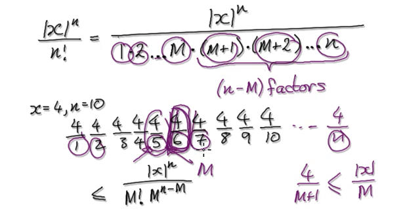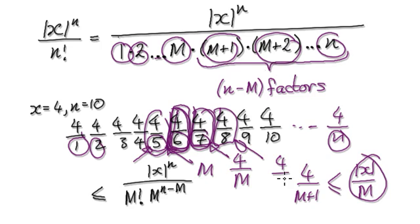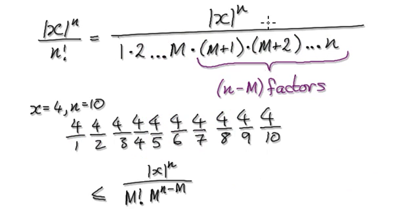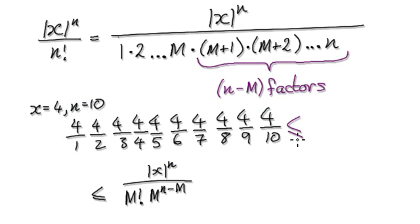The point here is that this fraction will be less than or equal to 4 over m. And then this next fraction would also be less than or equal to 4 over m, and so on. So we can say that the whole product here would be less than or equal to — imagine this as being 4 over 5 and so on, matching each factor up.